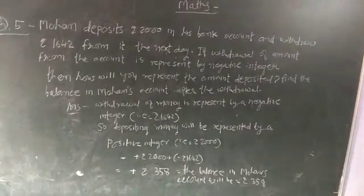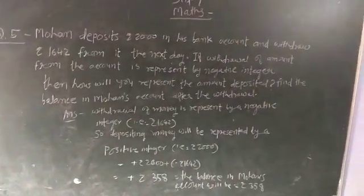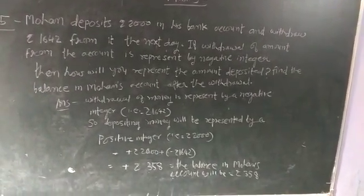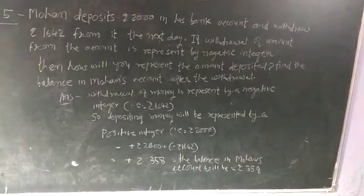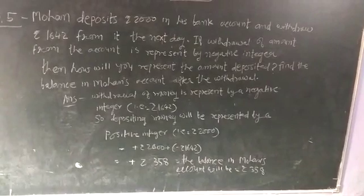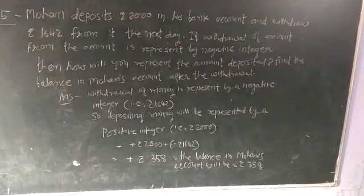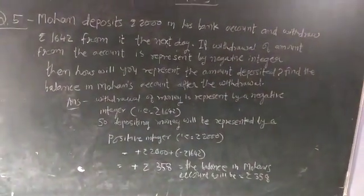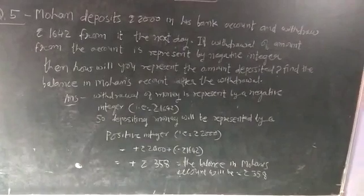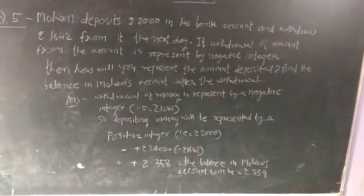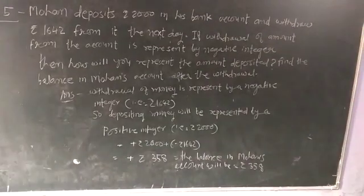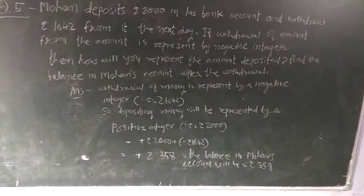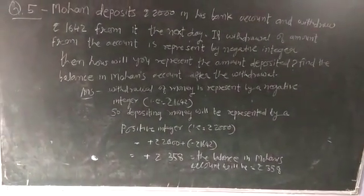Find the balance in Mohan's account. So, Mohan's account had Rs. 2,000 in his bank account, but on the next day, Rs. 1,642 was withdrawn from it. So, this withdrawal as a negative integer is Rs. 1,642.